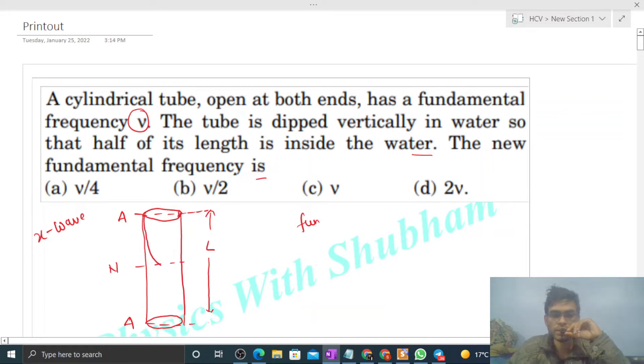Now you can see what is the distance between two anti-nodes. The distance between two anti-nodes is λ/2. So we can say wavelength by two will be length of the pipe, so wavelength will be twice of L.